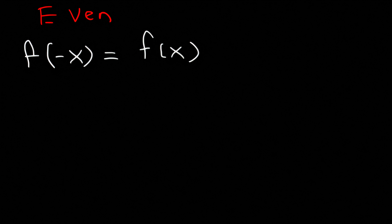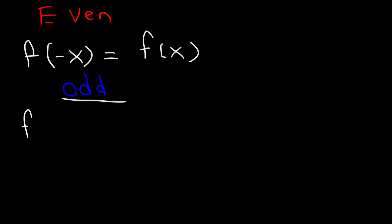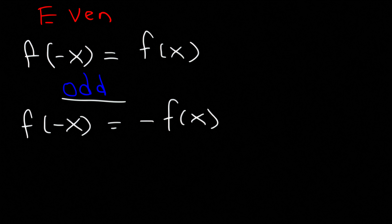Now what about if it's odd? It's odd if f of negative x is equal to negative f of x. So if you replace x with negative x, every term in the function has to change sign. If one term changes sign and the rest do not, it's not going to be odd.